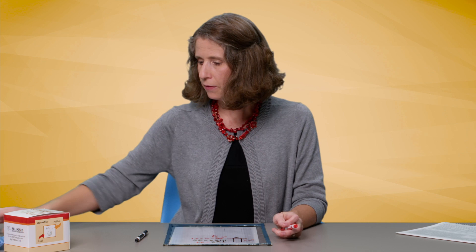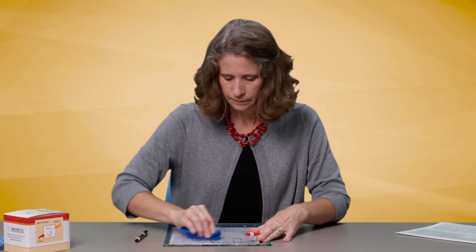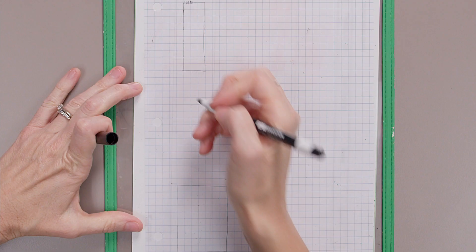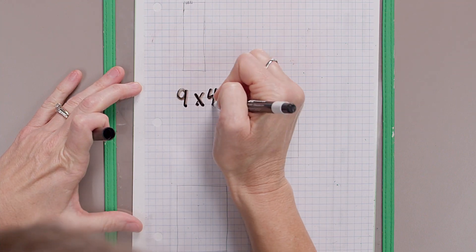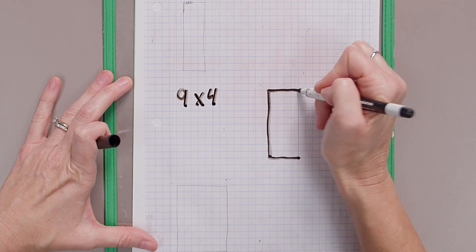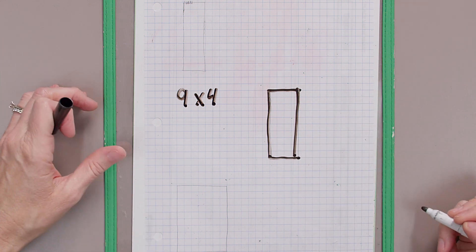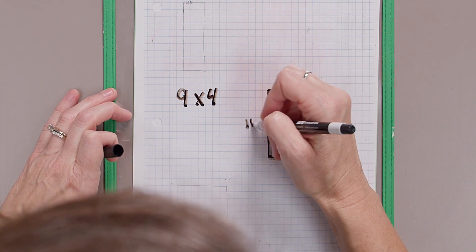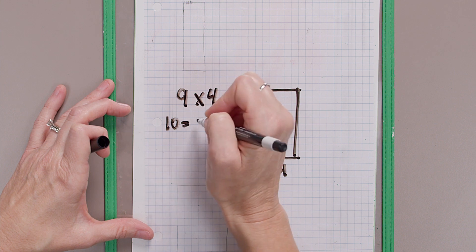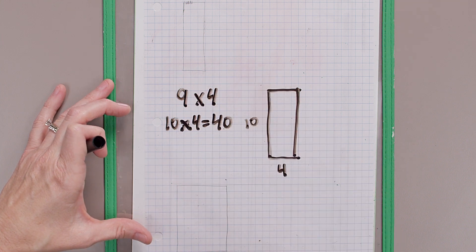Mathematicians, grab your graph paper and your markers or pencils, and let's try a couple more together. We're going to solve nine times four. I'll draw an area model — a ten by four rectangle — and label it ten and four. I don't know nine times four, but I know ten times four is forty.